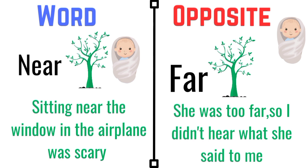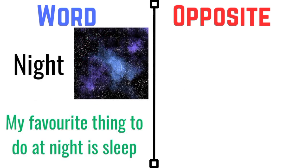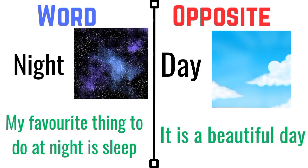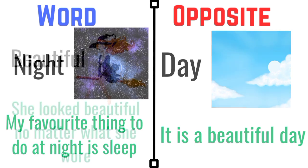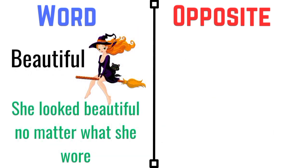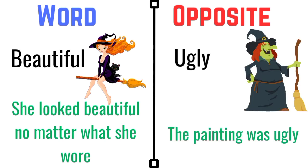Night. My favorite thing to do at night is sleep. The opposite of night is day. It is a beautiful day. Beautiful. She looked beautiful no matter what she wore. The opposite of beautiful is ugly. The painting was ugly.